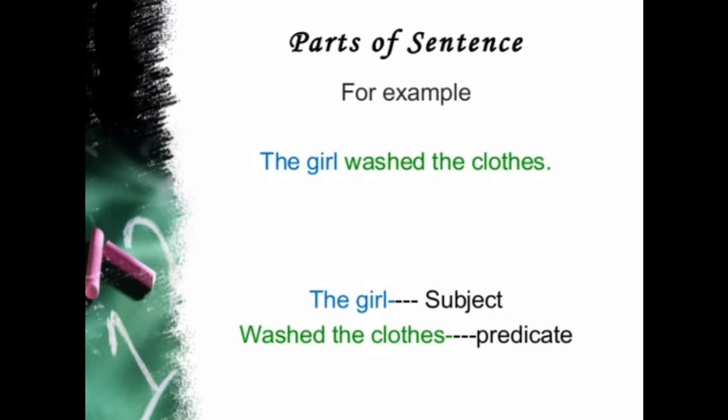The girl washed the clothes. In this we are having two parts. 'The girl' is the subject because it is the doer. And 'washed the clothes' tells us about the girl — what is the girl doing? Washing clothes. So 'washed the clothes' is the predicate because it is telling us about the subject. So here, 'the girl' is the subject and 'washed the clothes' is the predicate.